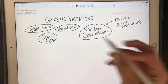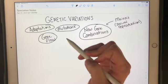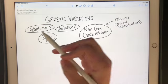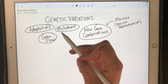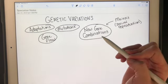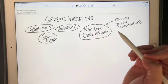So we have these methods of having genetic variation in our population: adaptations, mutations, gene flow, and new gene combinations through sexual reproduction.